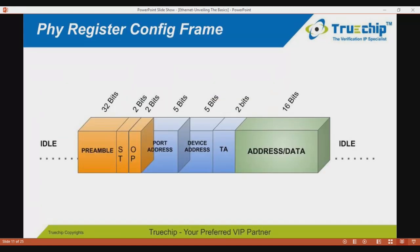The PHY register config frame begins with the preamble: at the start of each transaction, the management entity sends 32 logic 1 bits on the MDIO to provide the PHY with a synchronization pattern. The ST field indicates whether the frame uses direct or indirect addressing modes. The OP field specifies the operation to be performed; the controller supports four operations: read, write, addressing, and post-read increment.